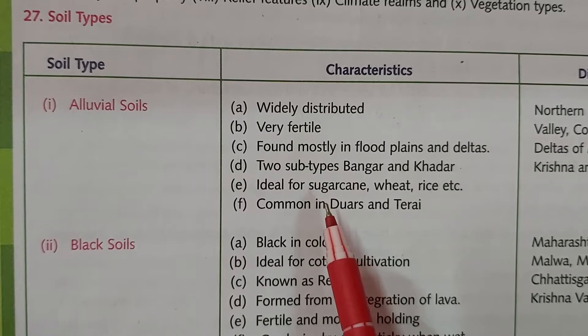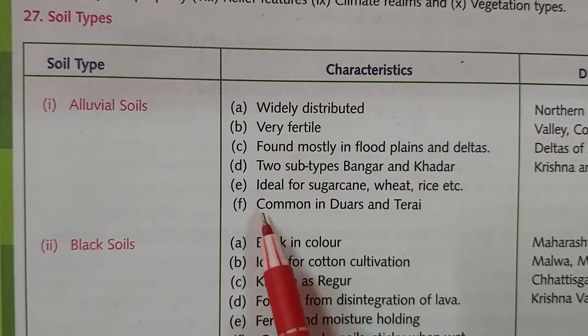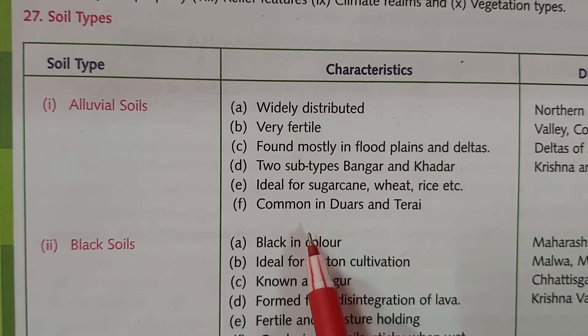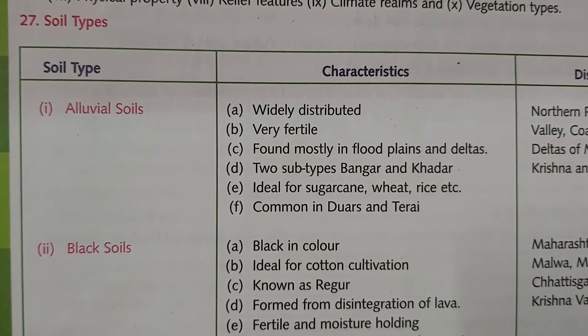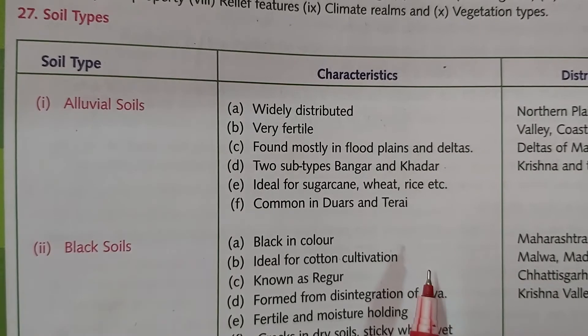Khadar is more fertile in comparison to Bangar. It is ideal for sugarcane, wheat, rice, etc., and is common in the Duars and Tarai region, found at the foothills of the Himalayas.